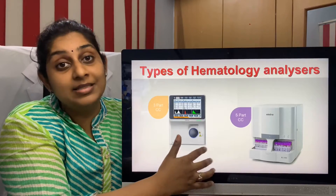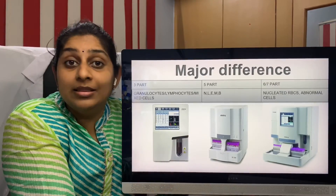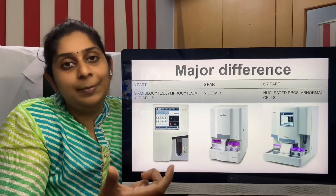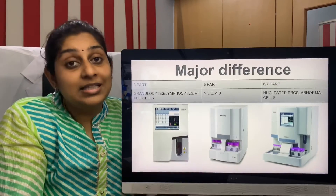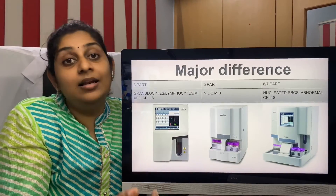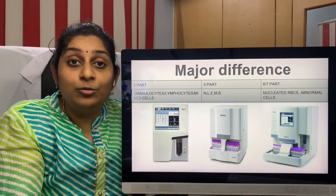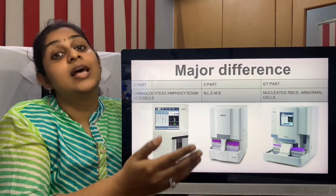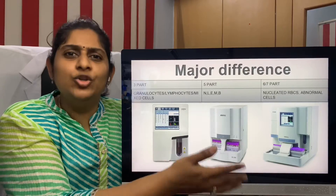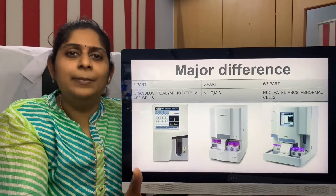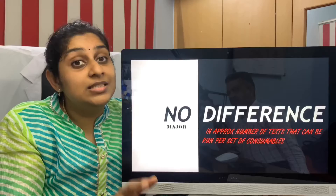We usually have two types of cell counters: the three-part cell counter, five-part cell counter, and also a six or seven-part cell counter. The major difference between these is the number of WBC parameters. In a three-part cell counter, WBCs are given as three parameters — mixed cells, granulocytes, and lymphocytes. In a five-part cell counter, all five WBCs are given as individual parameters. In a six or seven-part cell counter, we also get nucleated RBCs and abnormal cells. This is usually only required in a referral laboratory or a very big center. There is no major difference in the quality of the reports — it is only the WBC parameters which will be different.